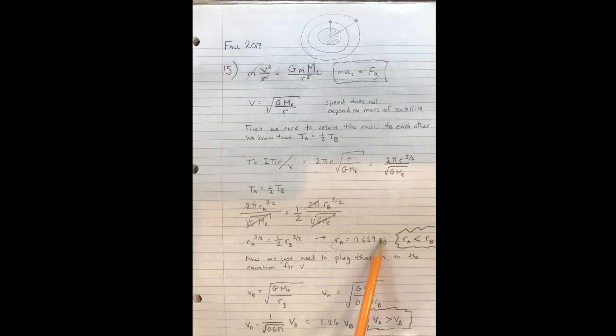Now we just need to plug that into the equation for v. So we can write that v_B is equal to the square root of G times the mass of the Earth divided by r_B, and then v_A is equal to the square root of G times the mass of the Earth divided by r_A, which is 0.629 r_B.